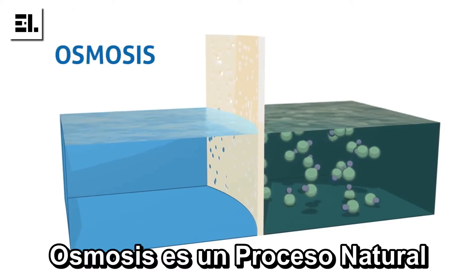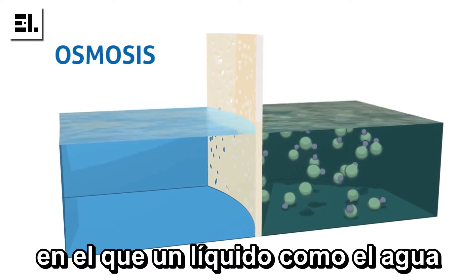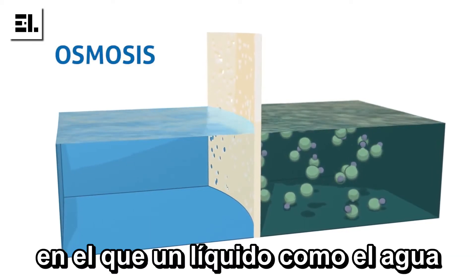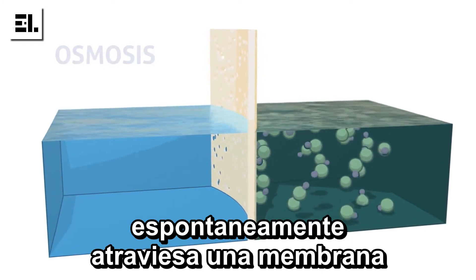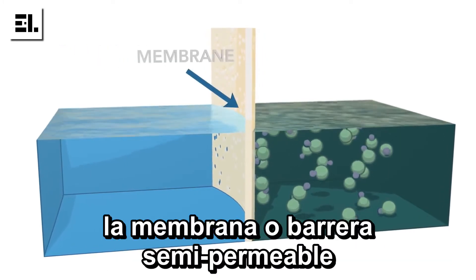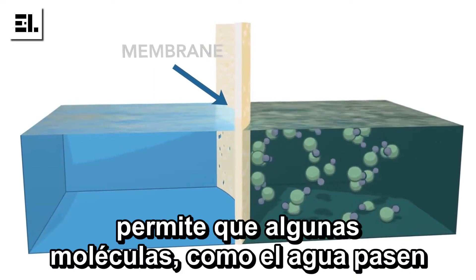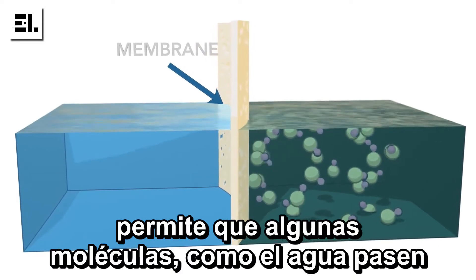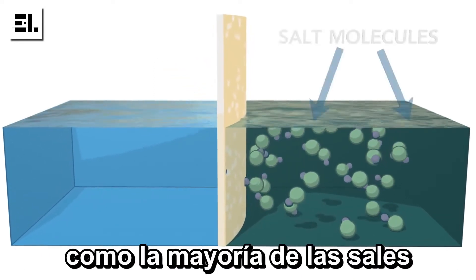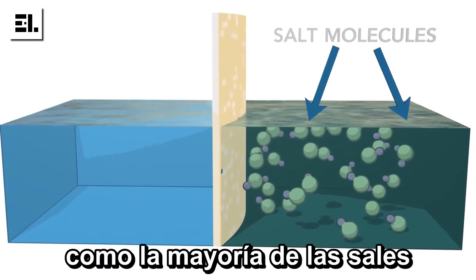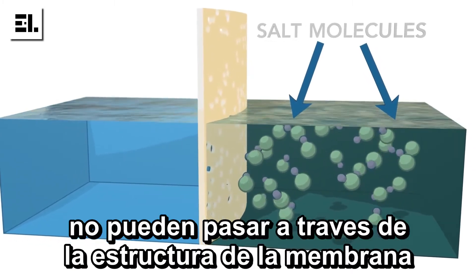Osmosis is a naturally occurring process in which a liquid, such as water, spontaneously passes through a membrane. The membrane, or semi-permeable barrier, allows some molecules, like water through, but other molecules, like the majority of salts, are unable to easily pass through the membrane's structure.